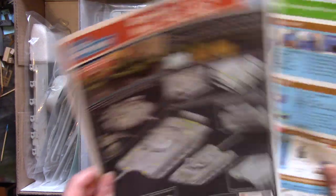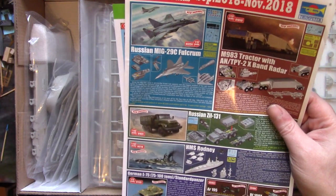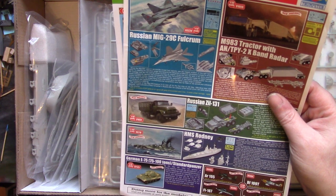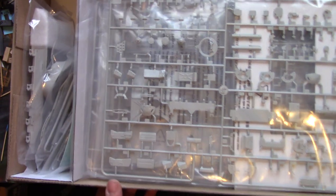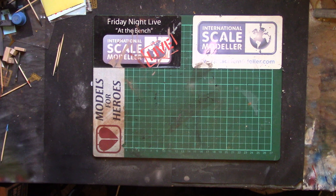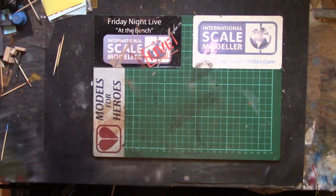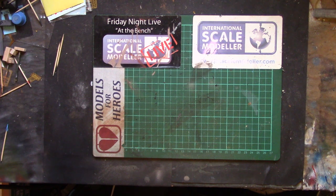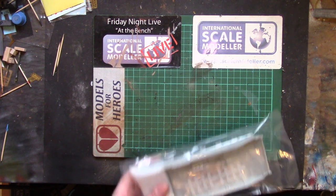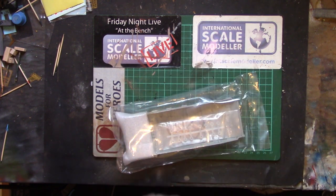Usual Trumpeter adverts in the top - MiG-29, HMS Rodney. Let's start with the lower hull. As usual with Trumpy, everything is bagged fairly separately.